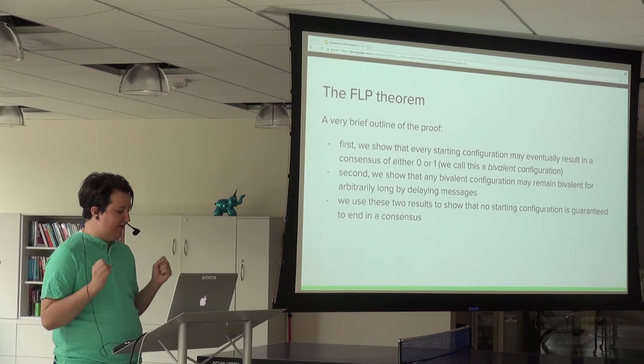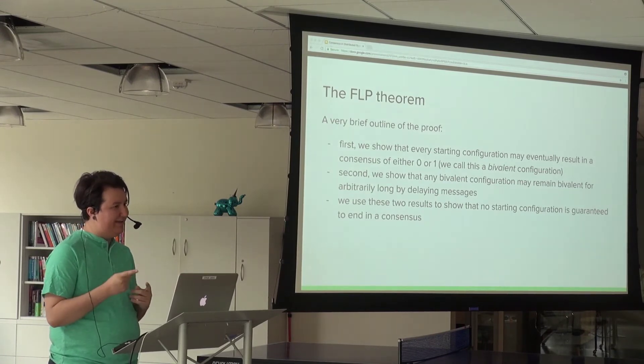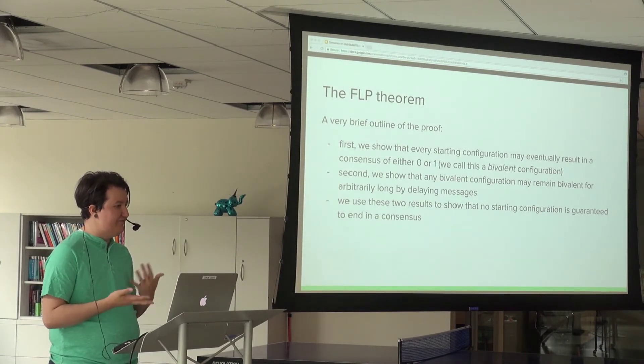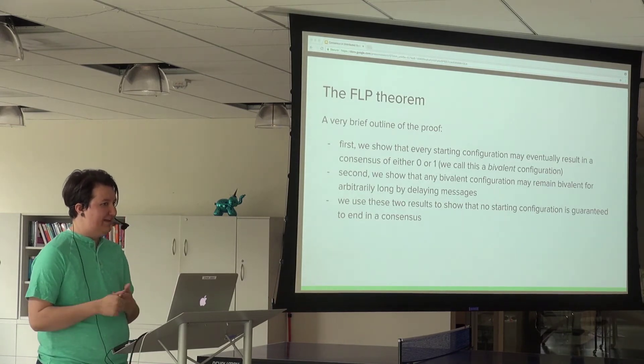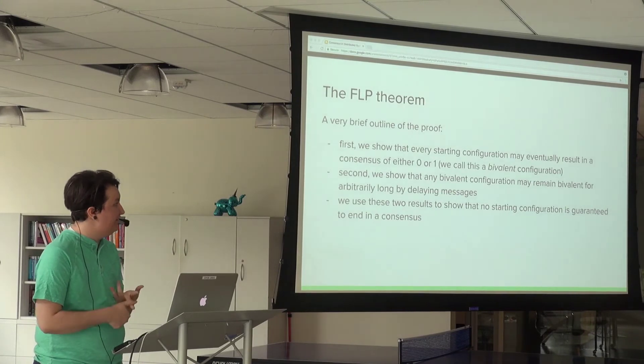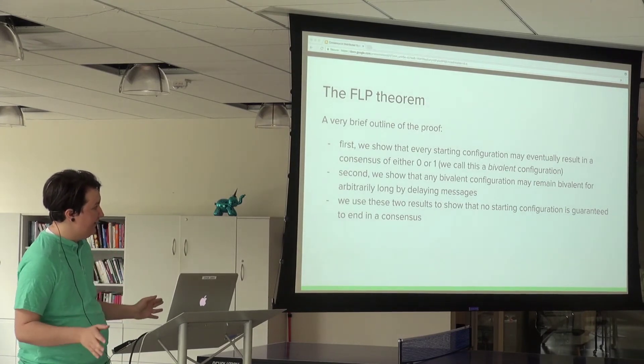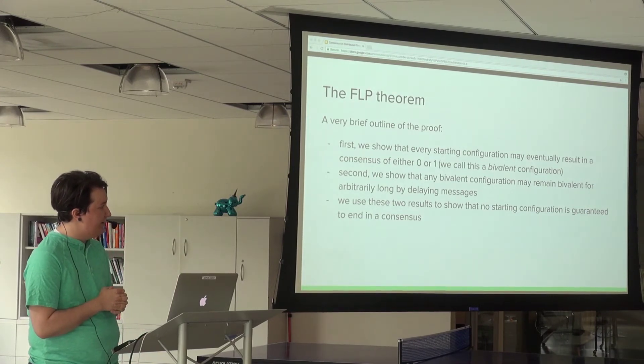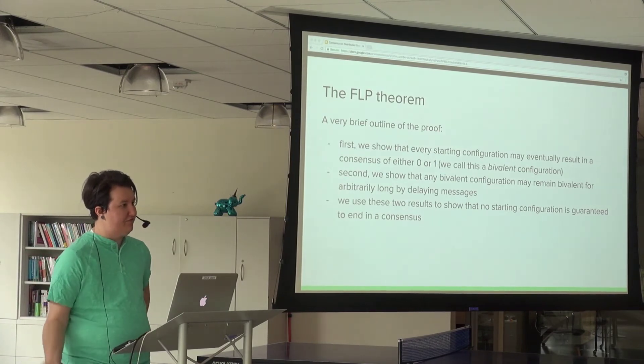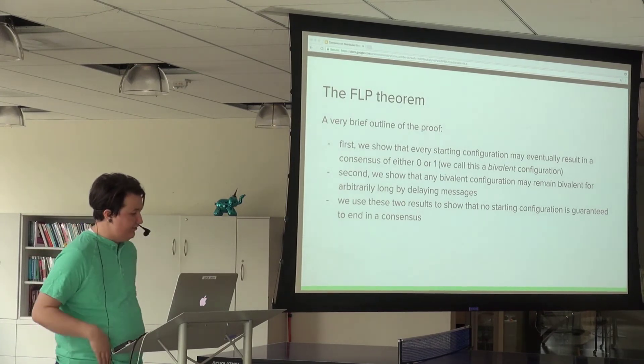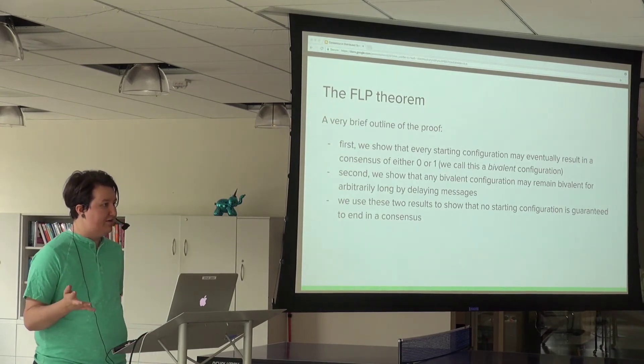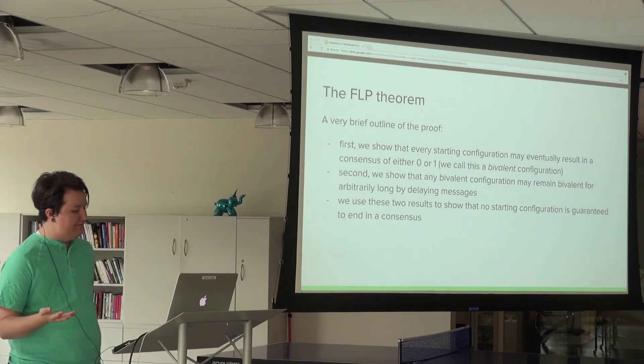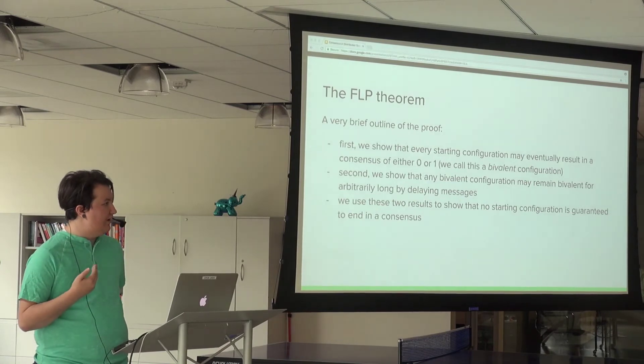If we have a simple distributed data store with a single key that can be zero or one, we can prove every initial configuration could eventually result in zero or one. None are guaranteed to result in one specific value. We show any configuration can remain in an ambiguous state - they call it bivalent - for arbitrarily long if we delay messages. Using those results, we show there's no starting configuration guaranteed to result in consensus.